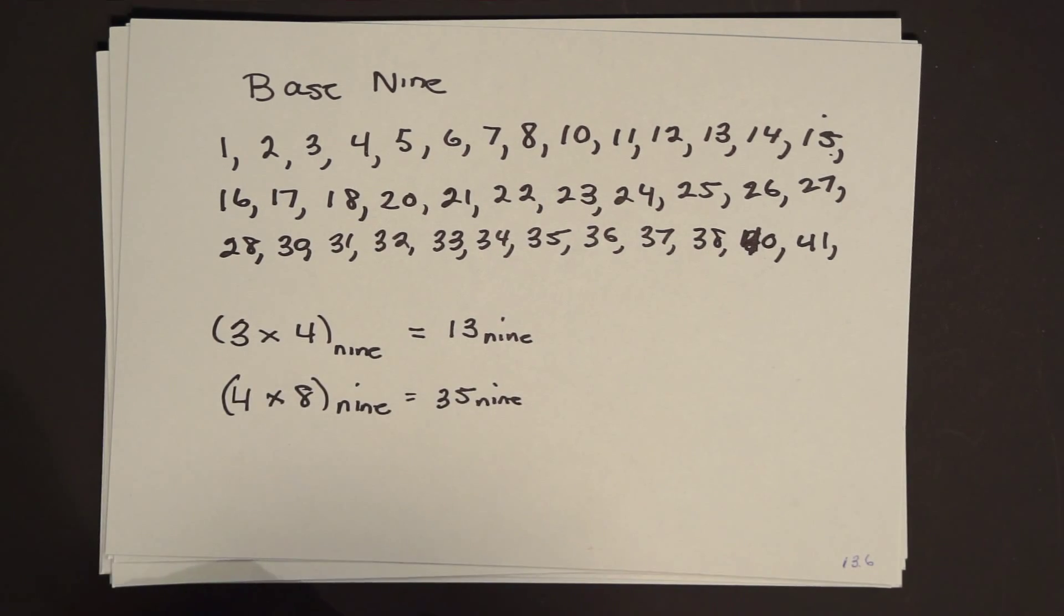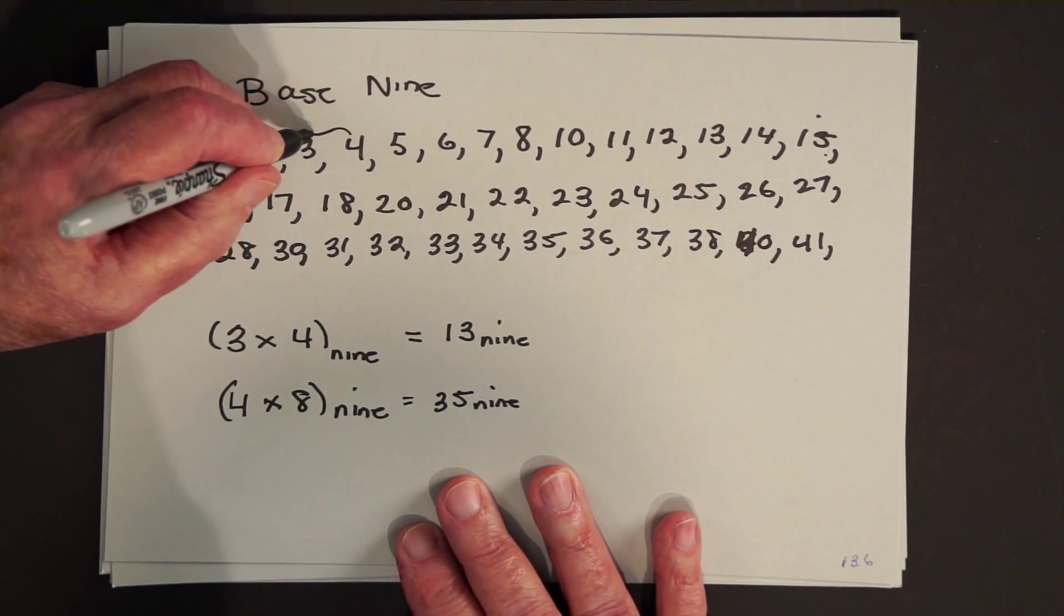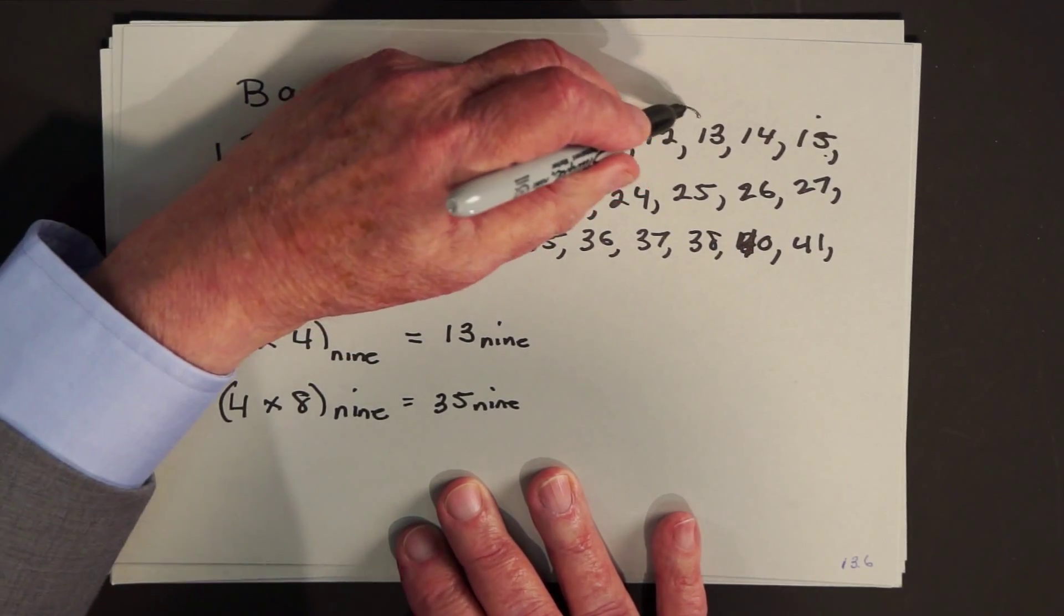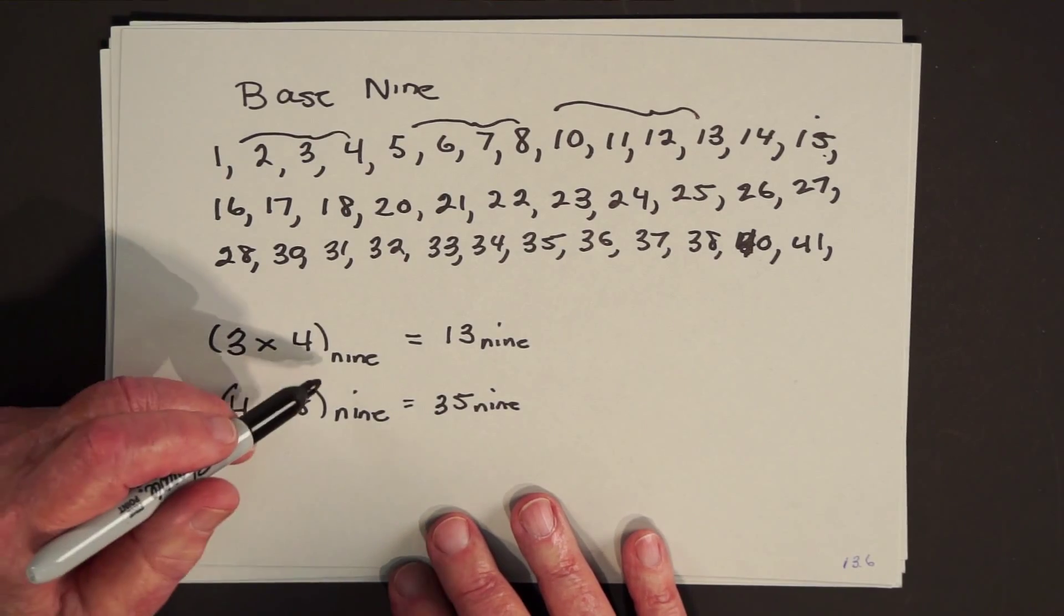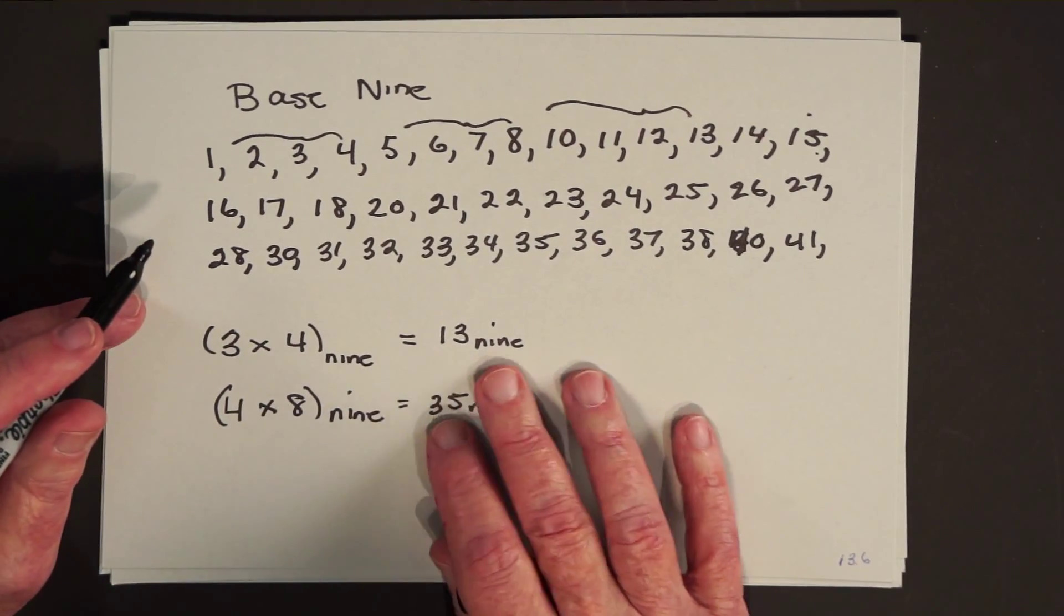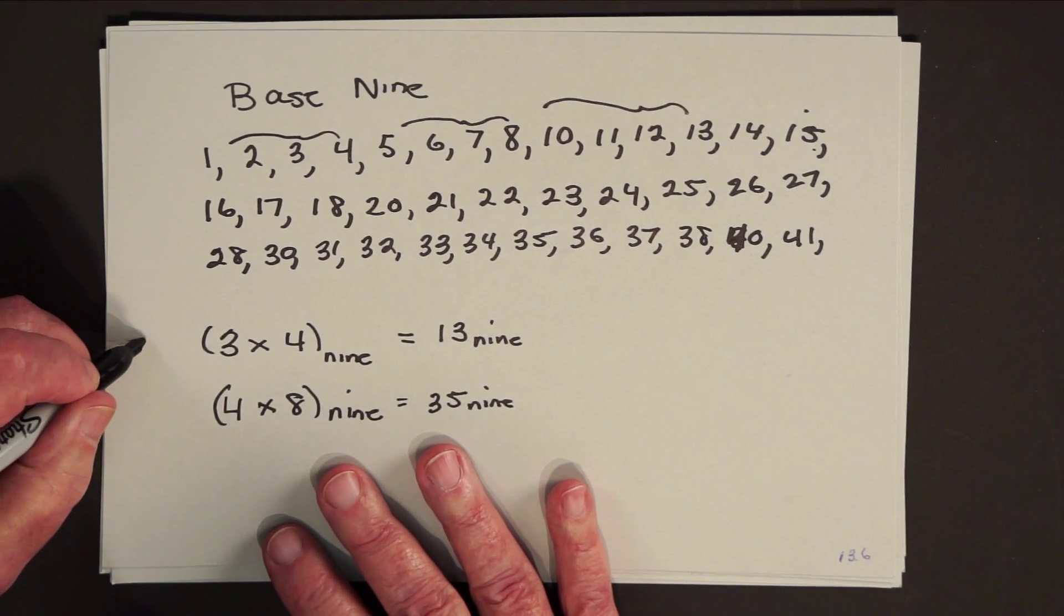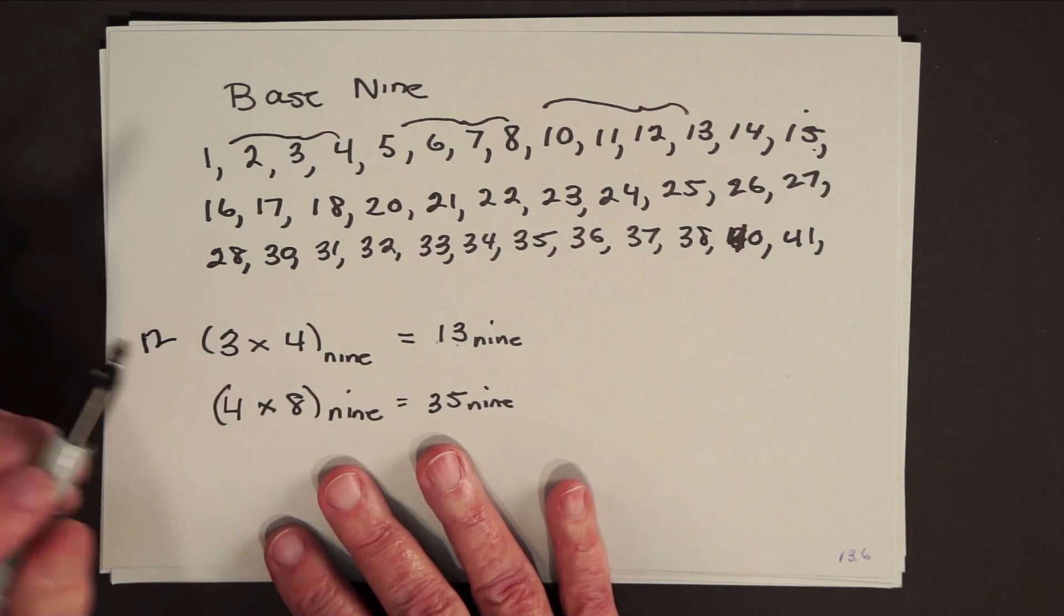Let's do 3 times 4 in base 9. It means you're going to take 3 groups of 4. So here's one group of 4, here's another group of 4, here's another group of 4. So in other words, what happens here? 3 times 4 in the base 9 system is 1, 3. Let's check that out. In our system, 3 times 4 would be 12, and a 12 is a 9 and 3 1's.